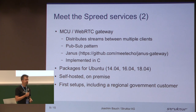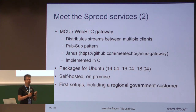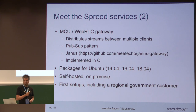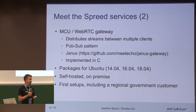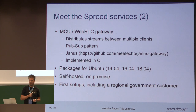The other service is the WebRTC Gateway, or the MCU. It can distribute the streams between different users, and it's using a pub-sub pattern, so a user publishes his stream to the WebRTC Gateway, and other clients can subscribe to the stream from the gateway. We're using the open source project Janus for that, integrated in the signaling server. Janus is implemented in C. We provide packages for Ubuntu — the current and last three LTS releases — and customers can install all these components on their own server, so it's still self-hosted, even if the data is no longer really peer-to-peer but going through the central server. We already have first setups, including some regional government customers.